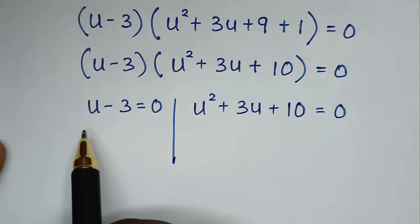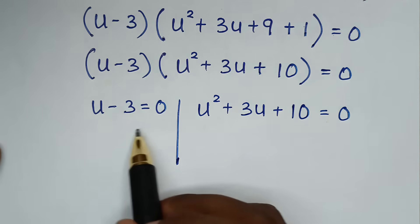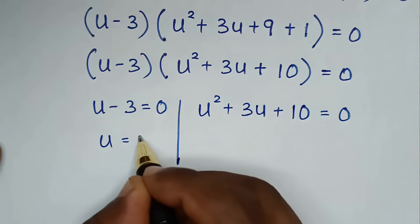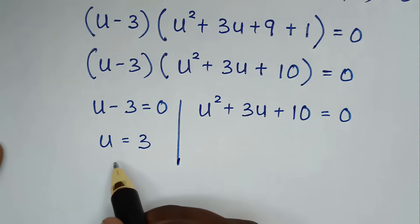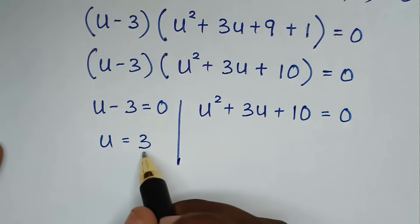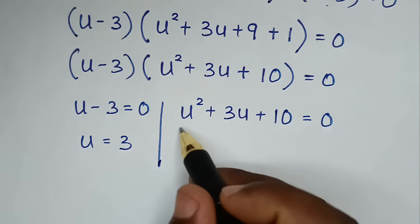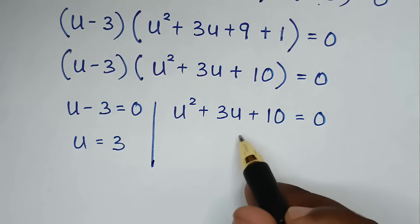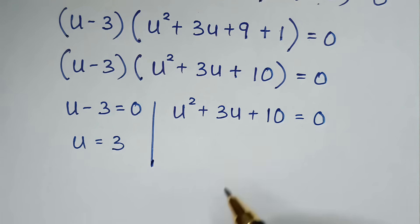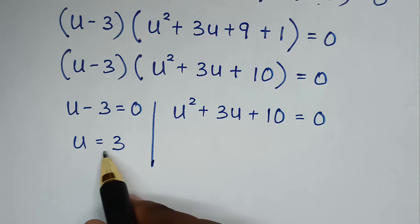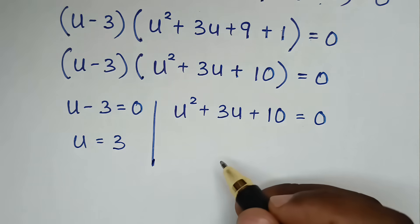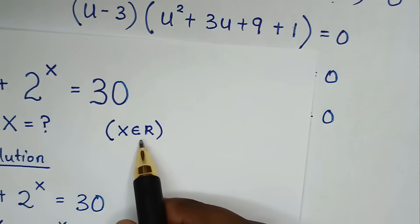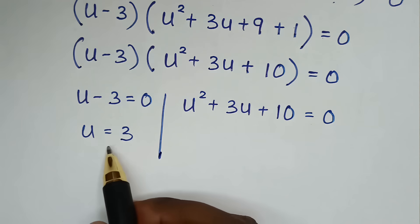Solving the first solution: u - 3 = 0, so u = 3. This is a real solution. Now let's check if the quadratic equation will also give a real solution, since x must be an element of the real numbers.